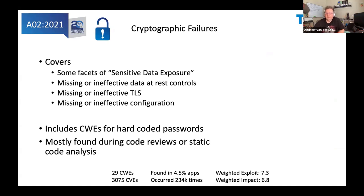A2: Cryptographic Failures is a bit of a catch-all for almost anything involving crypto, including some facets of sensitive data exposure and issues like not having TLS set up correctly. This is an area that can be addressed very easily — we're seeing a lot of cloud work where configuration is code, so tools can actually help you do a better job. One key problem is that tools never find something that's missing, so unless you're deliberately looking for cold spots, there's every chance a developer and an AppSec professional would both miss the absence of crypto.